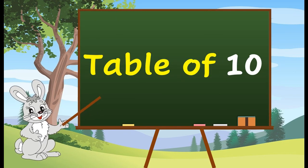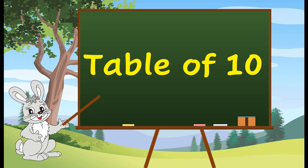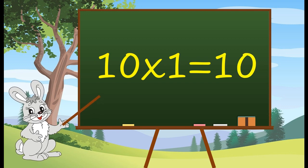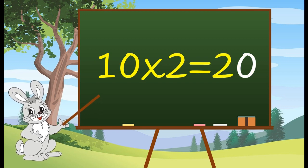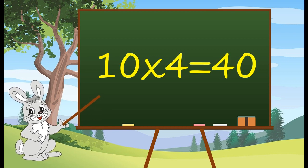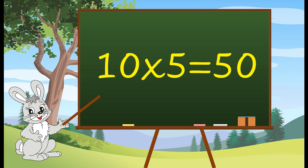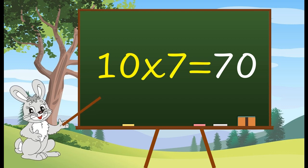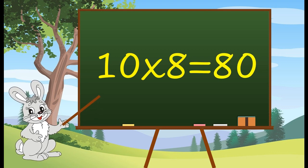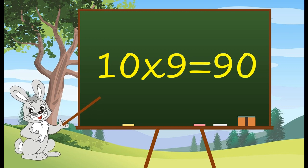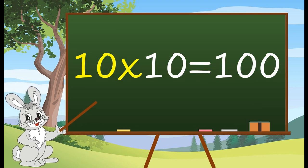Table of 10. 10 1's are 10. 10 2's are 20. 10 3's are 30. 10 4's are 40. 10 5's are 50. 10 6's are 60. 10 7's are 70. 10 8's are 80. 10 9's are 90. 10 10's are 100.